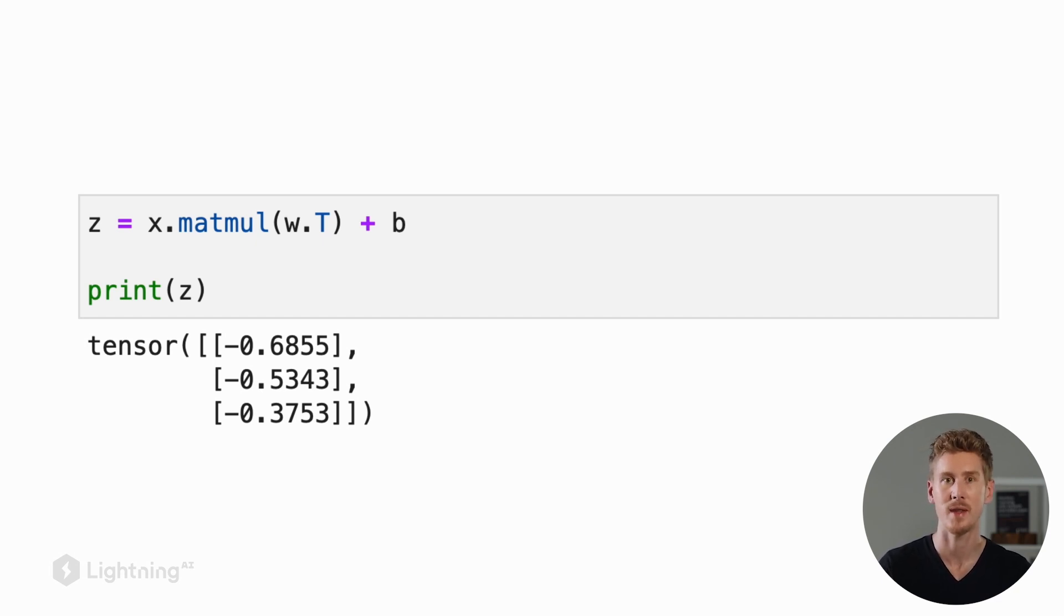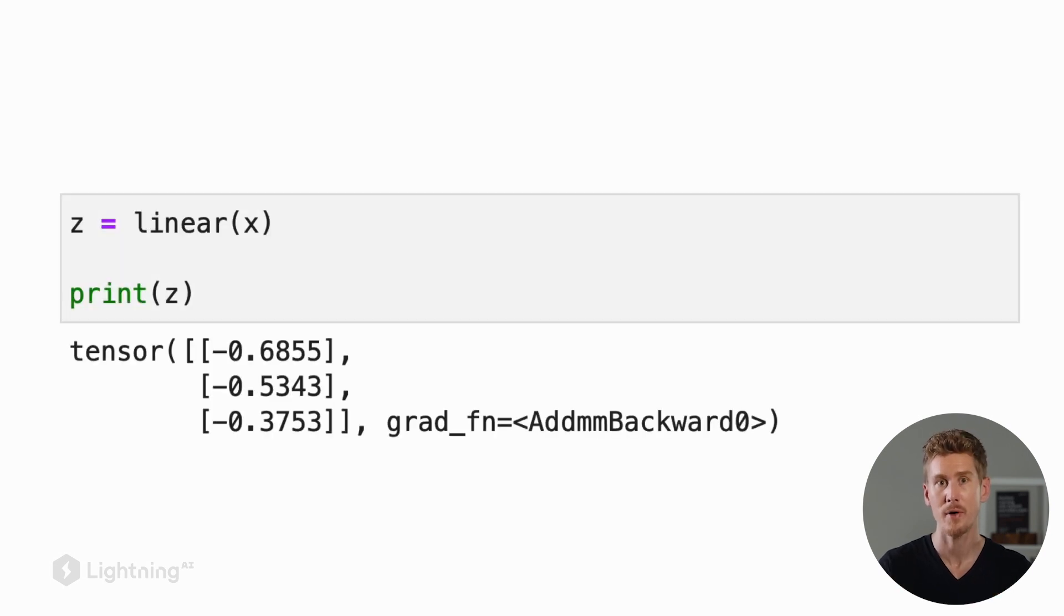And of course we would also add the bias unit. This is also something the linear layer takes care of for us. We don't have to worry about the matrix multiplication at all. All we have to do is to call linear on the input, and if the input is a batch of multiple training examples, everything will be taken care of.